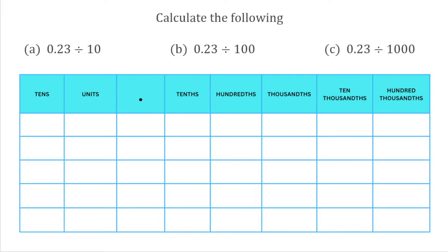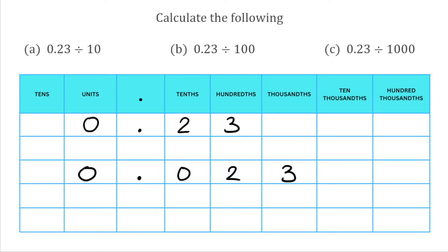We're starting with the number 0.23 this time. I've got zero in the units, my decimal point, then 2 in the tenths column and 3 in the hundredths. For 0.23 divided by 10, we move the digits one space to the right. The 3 in the hundredths is now in the thousandths, the 2 in the tenths is now in the hundredths, and the 0 from the units is now in the tenths. We put a zero in the units column, so 0.23 divided by 10 is 0.023.